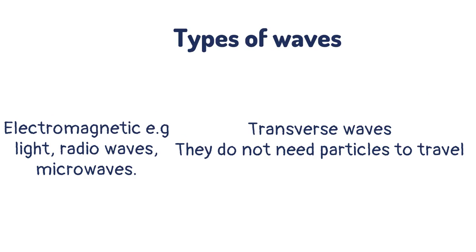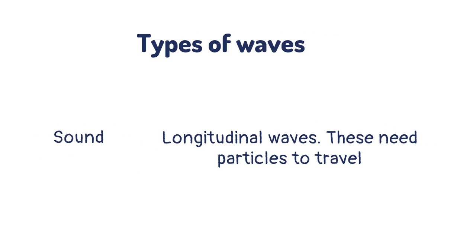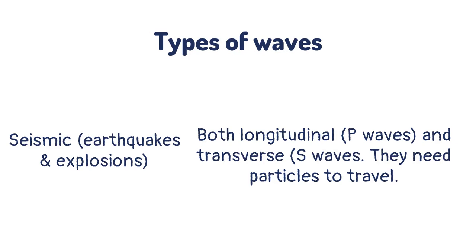Electromagnetic waves are transverse waves. These waves do not need particles to travel, and so they can pass through the vacuum of space. Sound waves are longitudinal waves and these waves need particles to travel — for example, sound waves travel by passing energy from one air particle to the next. Earthquakes and explosions produce seismic waves, which can be both longitudinal and transverse waves. Seismic waves need particles to travel.